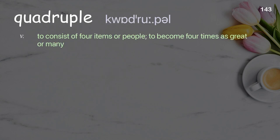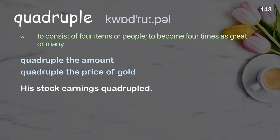Quadruple: to consist of four items or people; to become four times as great or many. Examples: quadruple the amount, quadruple the price of gold.